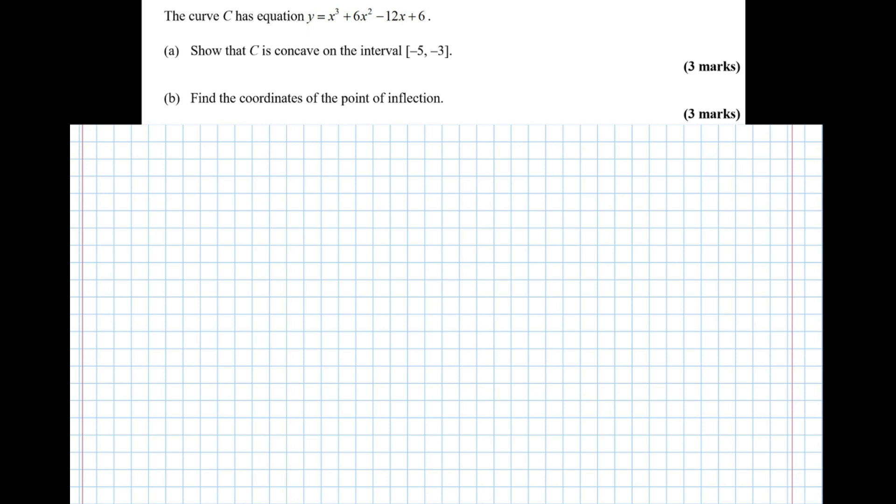Show that C is concave on the interval minus 5 to minus 3. Well first of all, let's try and find where the function is concave. So we need the second differential. So the first differential, dy by dx equals 3x squared plus 12x minus 12.